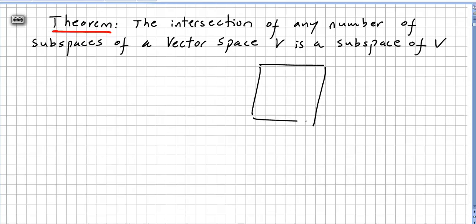So if we have a vector space and let us say we have here several subspaces, so the intersection of all these subspaces, it will be still a subspace of V.